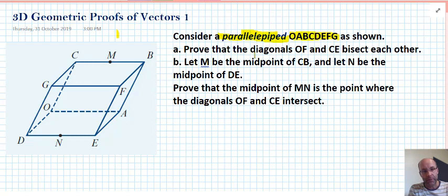With this given parallelepiped we have to prove two things. We have to A, prove that the diagonals OF and CE bisect each other. So they cut each other in half, and secondly after we do that, with the given points M and N, which are the midpoint of CB and DE respectively, we have to prove that the midpoint of MN is the point where OF and CE intersect. We're going to look at proof A first and then related to that is proof B.